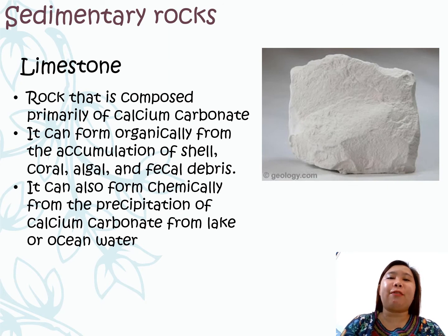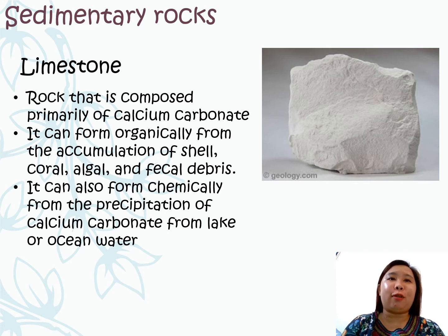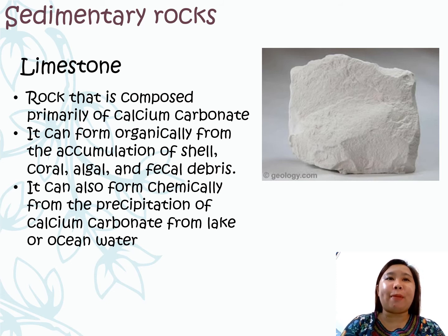Limestone is a kind of sedimentary rock that contains calcium carbonate. Unlike dolomite, it doesn't contain magnesium. It can form organically from the accumulation of shell, coral, algae, and fecal debris. It can also form chemically from the precipitation of calcium carbonate from lake or ocean water.